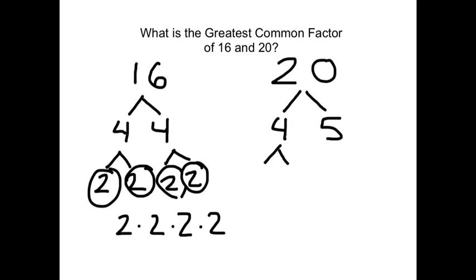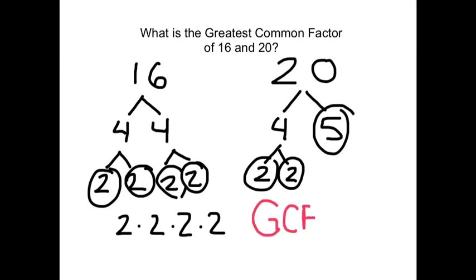4 is composite, so it's got the factors of 2 times 2, and the 5 factor is prime. Now, what we need to do to find the GCF, the largest number that goes into 16 and into 20, is to find the prime factors that are the same for both.